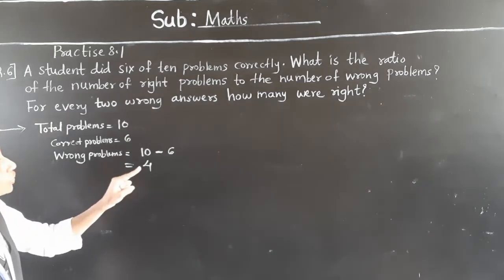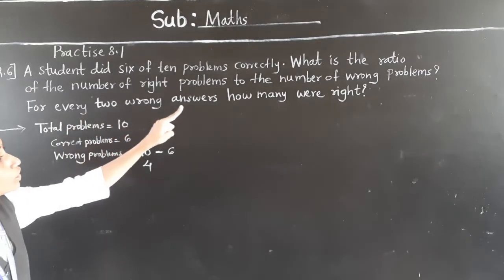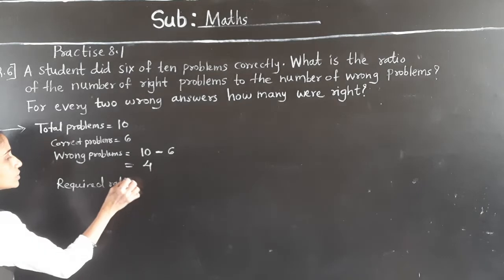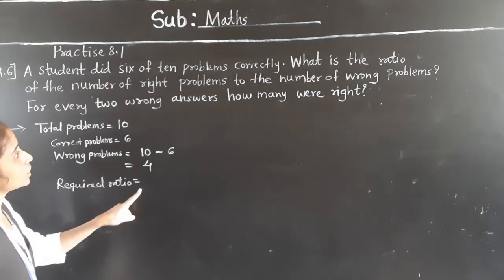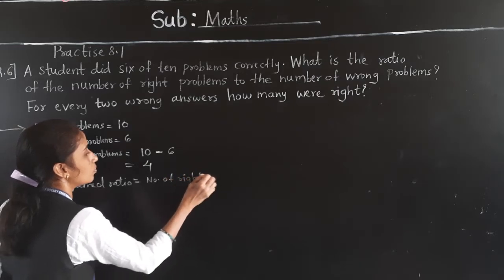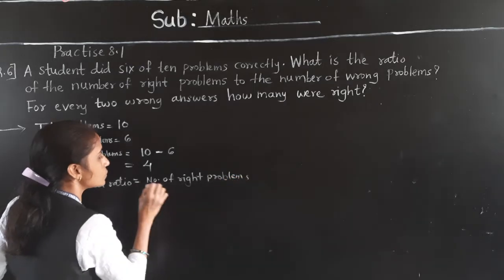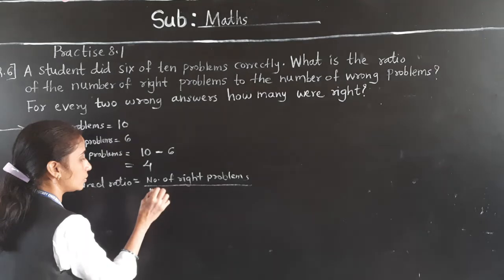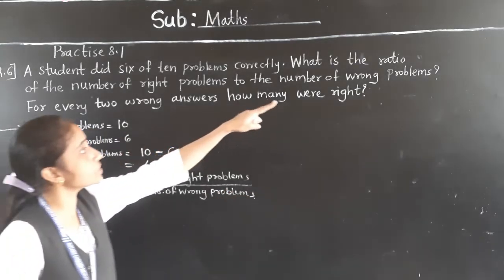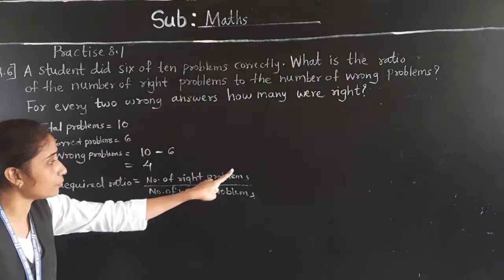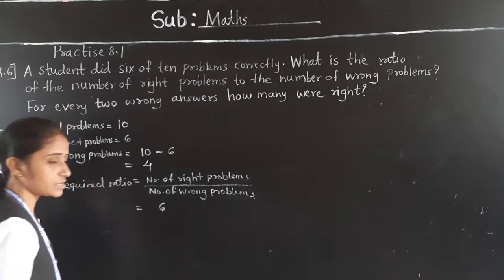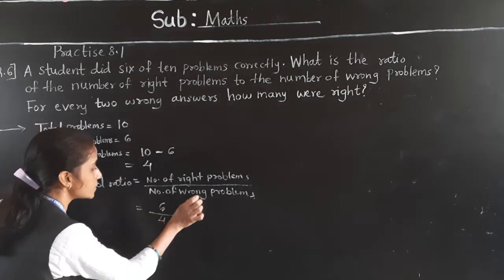What is asked in the question? What is the ratio of the number of right problems to the number of wrong problems? Number of right problems is 6, and number of wrong problems is 4.